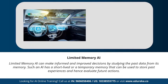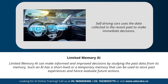Next we have limited memory AI. Limited memory AI can make informed and improved decisions by studying past data from its memory. Such AI has a short-lived or temporary memory that stores past experiences and helps evaluate future actions. Self-driving cars are limited memory AI — they use data collected in the recent past to make immediate decisions, using sensors to identify civilians crossing the road, steep roads, or traffic signals, which helps prevent future accidents.